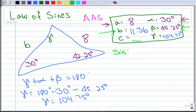So we can say the sine of 30 degrees is to 8 as the sine of 104.75 degrees is to C.